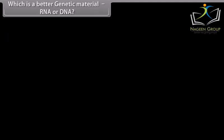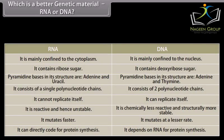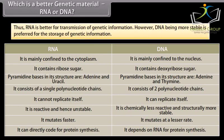Which is a better genetic material — RNA or DNA? RNA is better for the transmission of genetic information. However, DNA, being more stable, is preferred for the storage of genetic information.